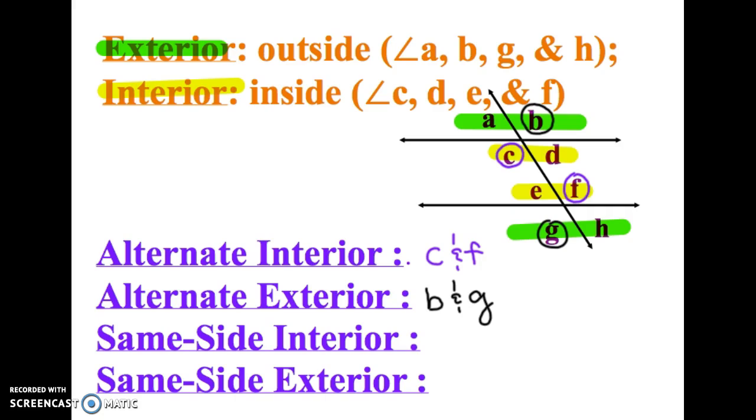Okay, the next type is same side interior. So this time you want it to be on the same side of the transversal, either left or right, and you want it to be inside the parallel lines. So for example, C and E are both interior and they're both on the left of the transversal.